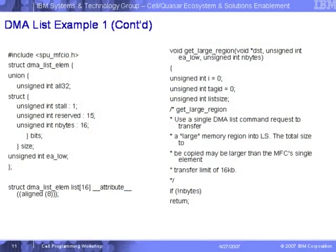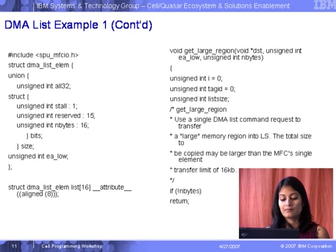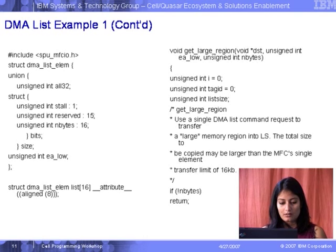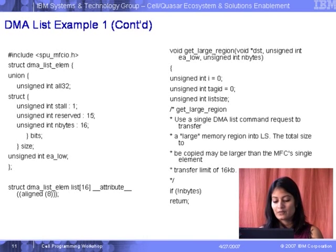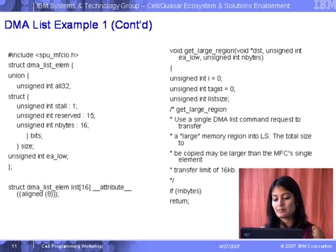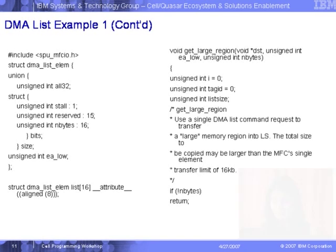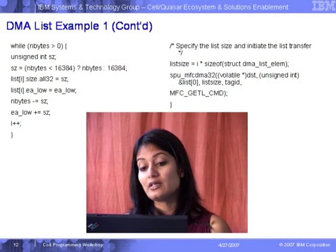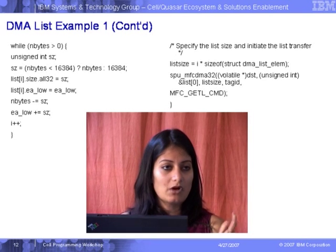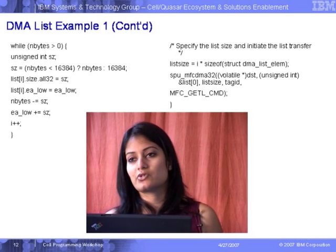In the code example, there's a stall bit in the structure with some reserved bits, number of bytes set to 16, typedef'd to bits, and the union consists of that structure and the effective address low. The DMA list element must be aligned — alignment is very important. For every transfer: if the size is less than 16KB, it is set to N bytes per list element; if it is more than 16KB, it is truncated to 16KB.